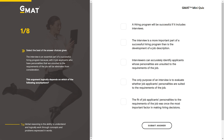Question one — select the best of the answer choices given. The interview is an essential part of a successful hiring program, because job applicants who have personalities unsuited to the requirements of the job will be eliminated from consideration. This argument logically depends on which of the following assumptions? For critical reasoning I recommend spotting the weakness yourself before looking at the answers. They gave one reason why an interview is good — we can eliminate unsuitable personalities — but that leaves so many possibilities. Are there other ways to weed out people with unsuitable personalities?